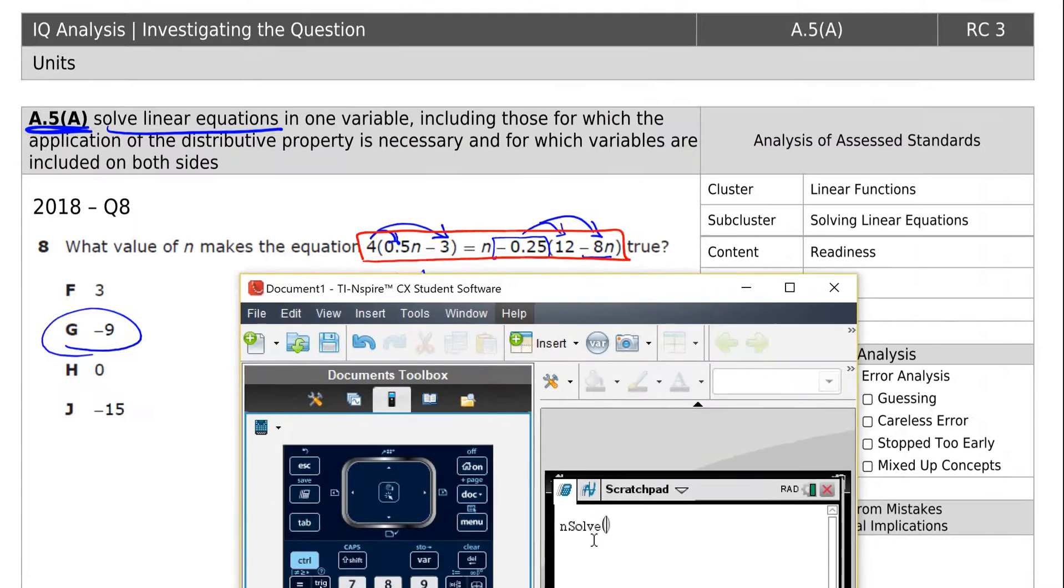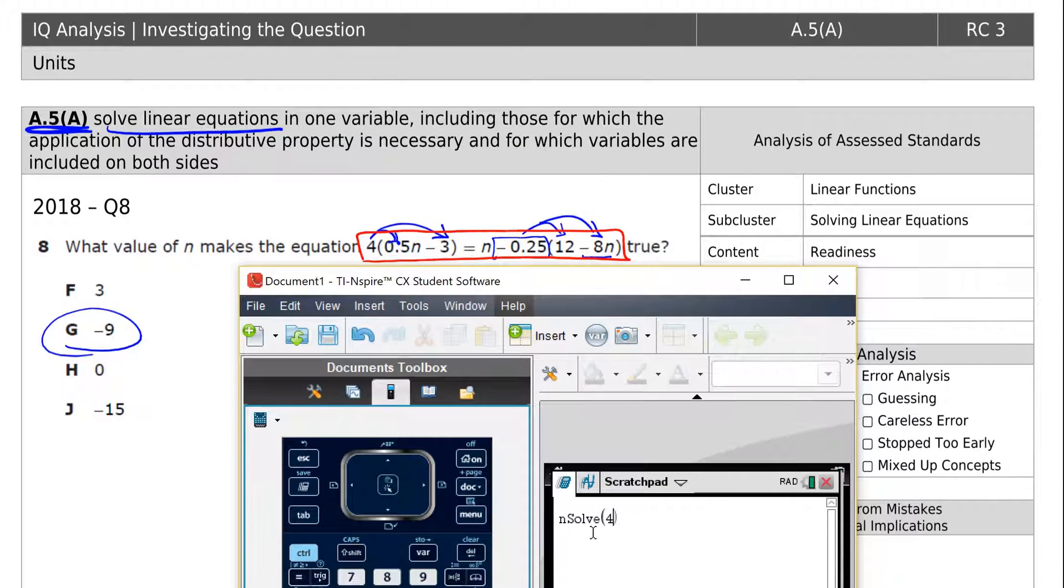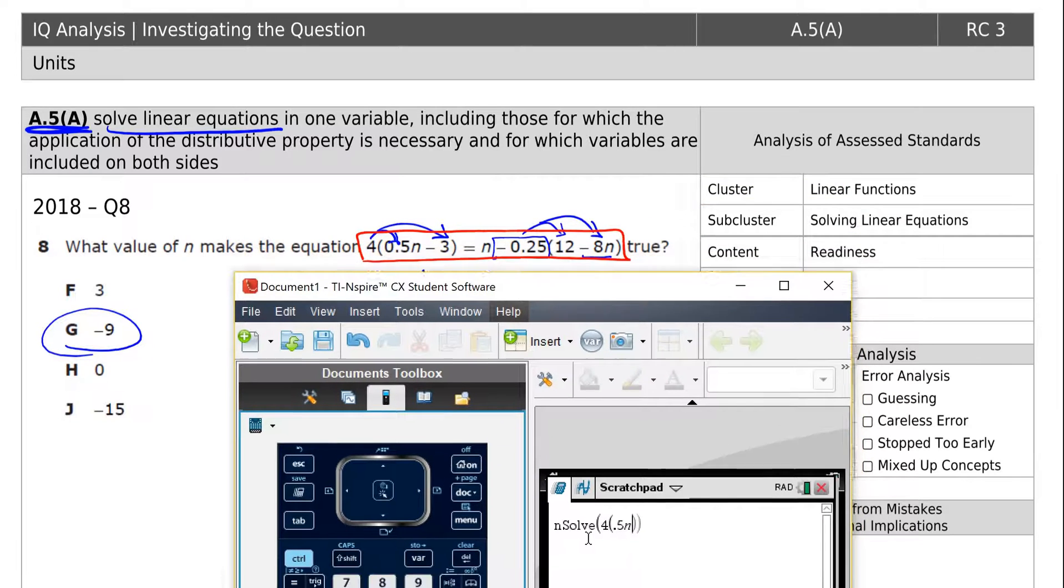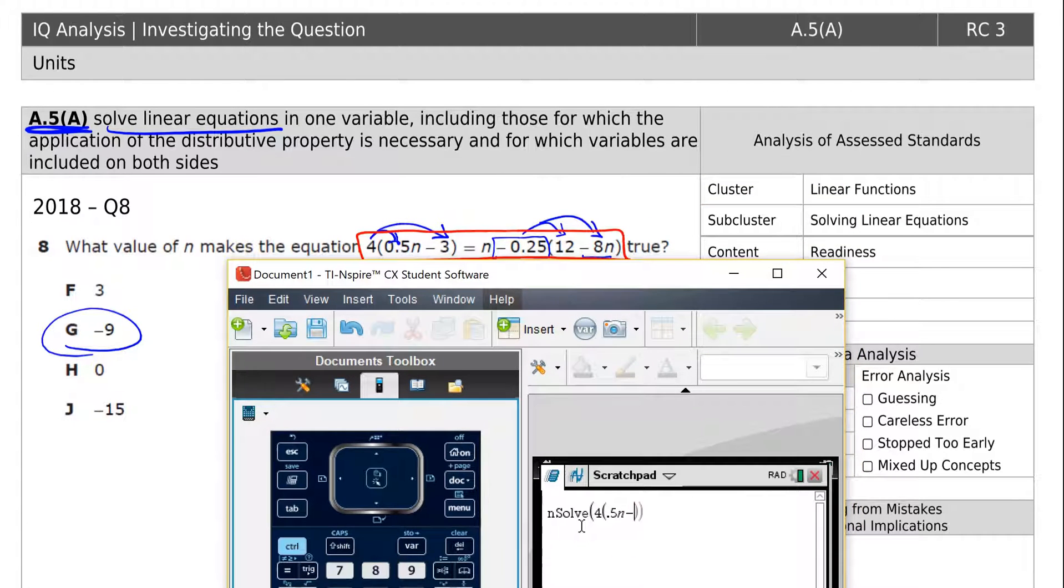And it gives us the nsolve function, and we're going to type in the equation. So we've got 4, parentheses, 0.5, and you can use n if you want to use n, or you can use x. Since it's n in the problem, let's use n. Minus 3, close parentheses, equals n minus 0.25, open parentheses, 12 minus 8n.